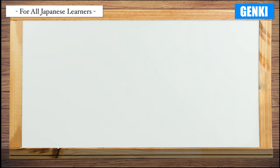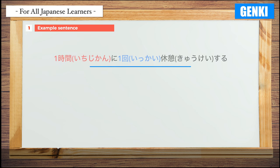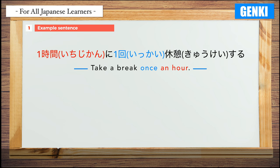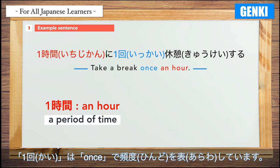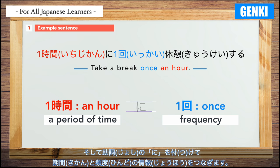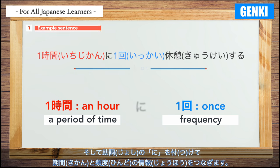Example 1: 1時間に1回休憩する — Take a break once an hour. The word 1時間 (an hour) indicates the period of time, and 1回 (once) indicates frequency. The particle ni is added to connect the information of period and frequency.